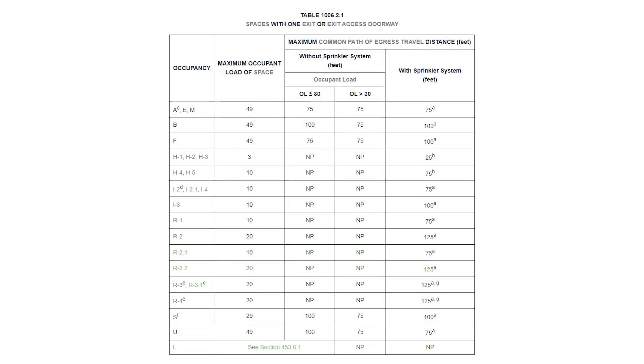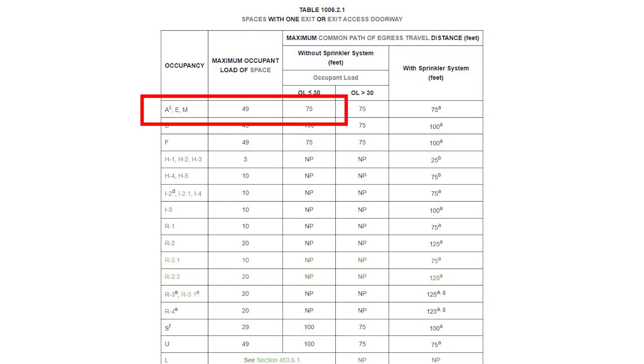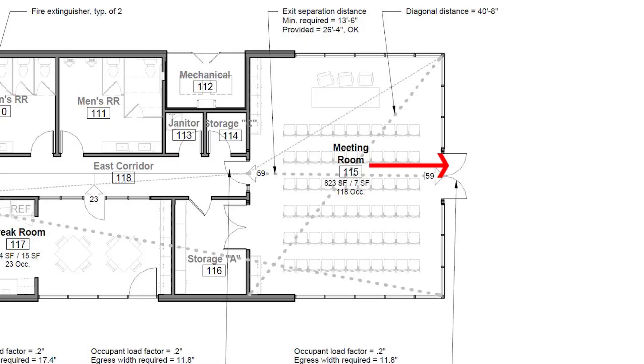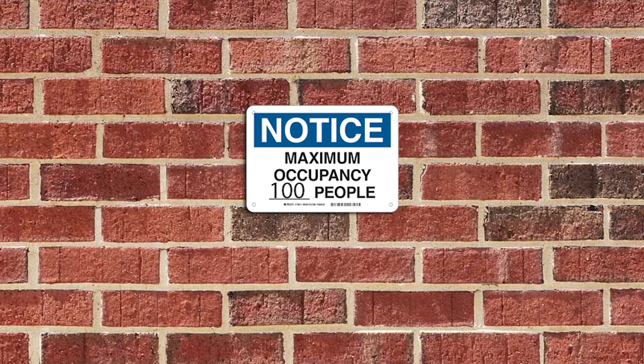Here's where things get a little tricky. The code tells us that for assembly spaces with more than 49 people, we have to provide at least two exits. We have to take our total of 118 people and split them in half, so each half of the room has a door to exit from. There's another code requirement that says these doors have to be a certain distance away from each other. In this room, the conference room, and the break room, we'll actually put one of those maximum occupancy signs up on the wall with the number we calculated. This is required in all spaces classified as assembly spaces. So the next time you see one of those max occupancy signs, you'll know why it's up there and how that max number was calculated.